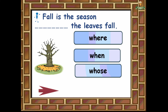'Fall is the season ___ the leaves fall.' What is the correct answer? Fall is a season — like spring, winter — these are the four seasons, so this refers to time. The correct answer is when. 'Fall is the season when the leaves fall.'